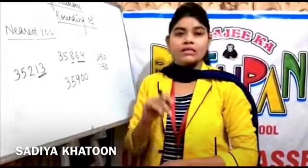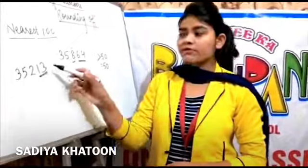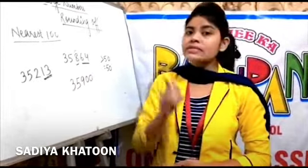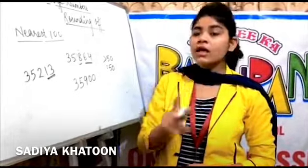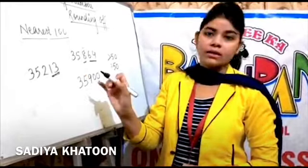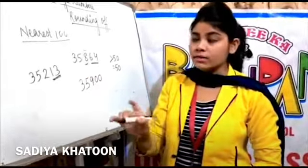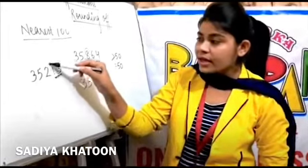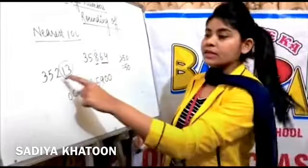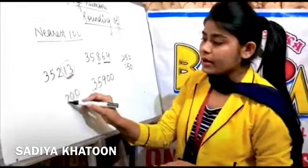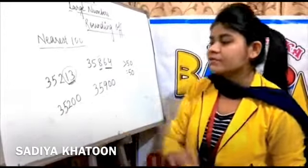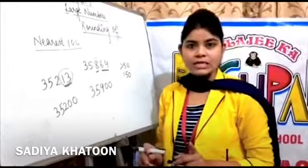The last two digits are 13, which is less than 50. When the last two digits are less than 50, you do not increase the hundreds place digit — it stays as it is. But the two digits you checked still become zero. So the hundreds digit 2 stays the same, and the last two digits become zero. The answer is 35,200.